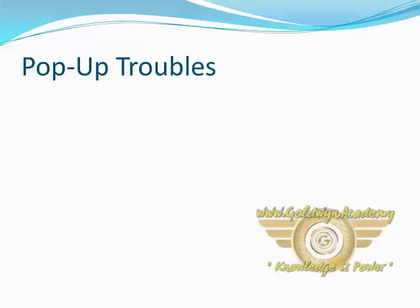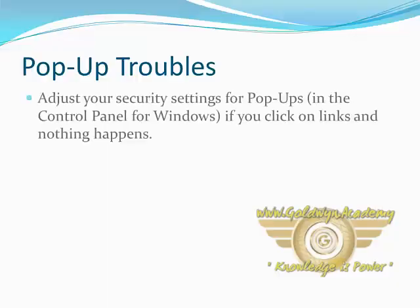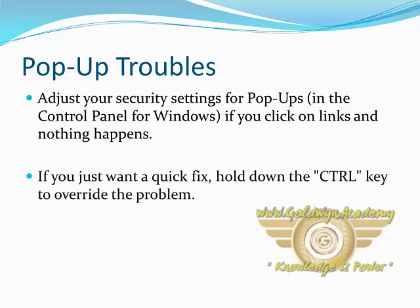Pop-Up Troubles. Adjust your security settings for pop-ups in the Control Panel for Windows. If you click on links and nothing happens, and you just want a quick fix, hold the Control key to overwrite the problem.